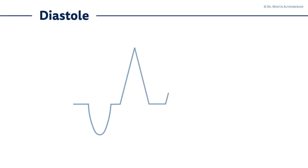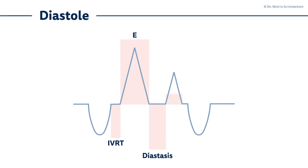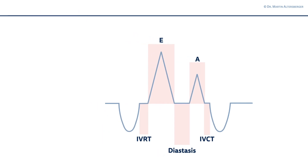We can see it in another diagram, and in this diagram you will find several time intervals and waves we have to measure at a later stage. We see the E-wave and the A-wave over here. Then we see the IVRT, the IVCT, and diastasis. What does this mean and how can we differentiate those time intervals?